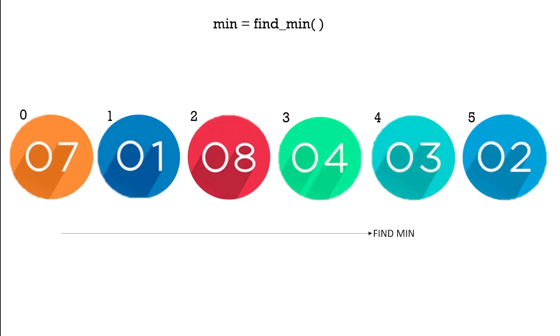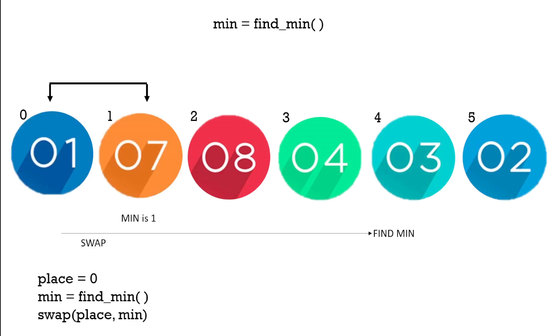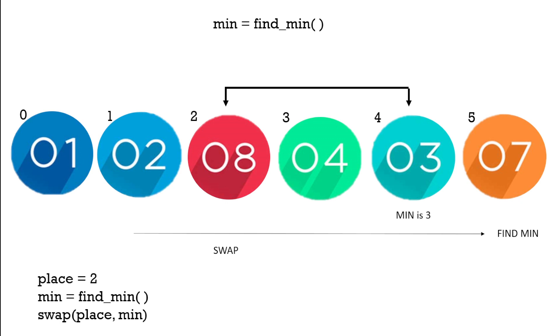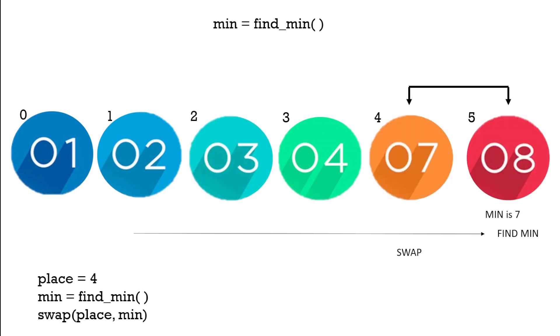With selection sort, we find the minimum number remaining and swap it into the lowest place. So here we swap the three with the eight. Four's in the right place, then seven with the eight.